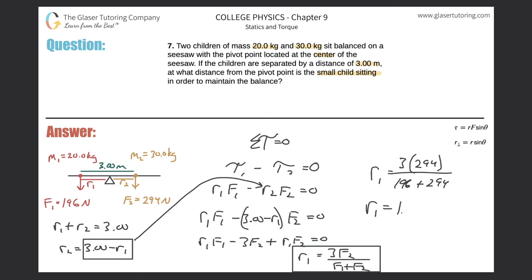And voila, just solve. So three times 294 divided by 196 plus 294, and we get a value of 1.8 meters, which does make sense. So 1.8 meters is the answer.